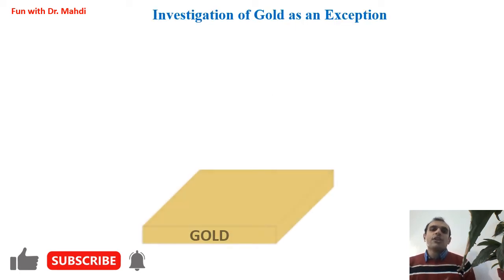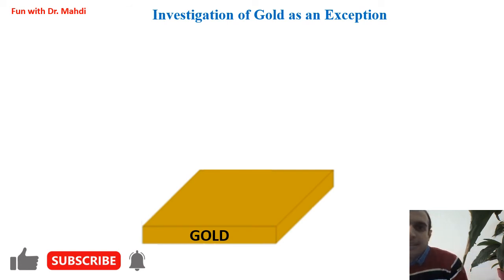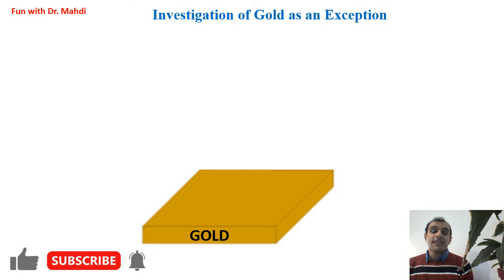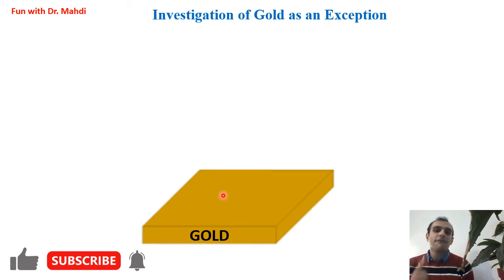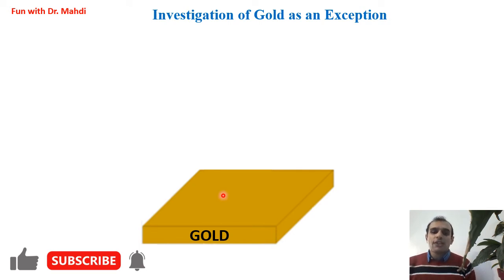Now, in this slide, I would like to investigate gold as an example. For gold, it's a little bit different. When we have gold and we want to functionalize it, we don't need to use any functional group on the surface — we don't need to have hydroxyl or NH2 amine on the surface. But please note, we need to have thiol in our compound. When we have thiol in the structure of our compound, we can functionalize gold without any functional group on the surface.